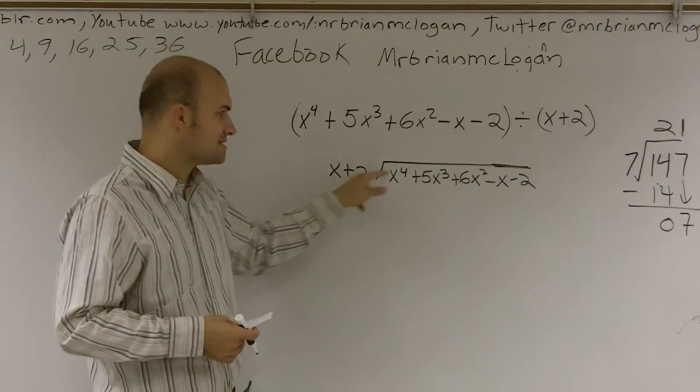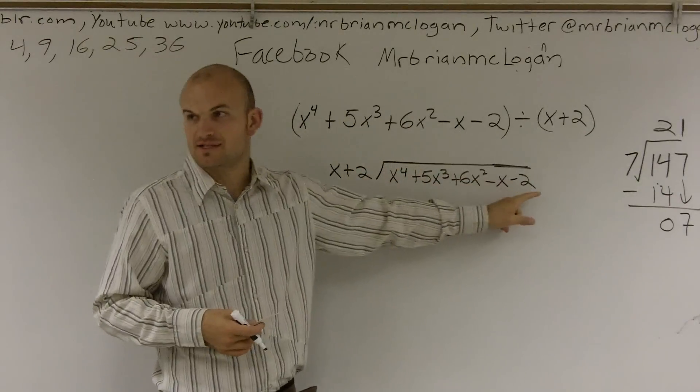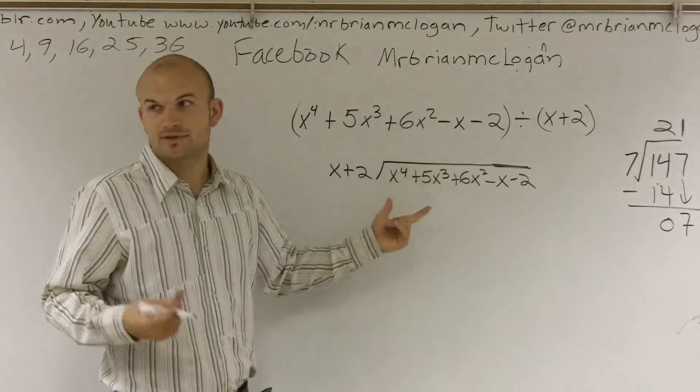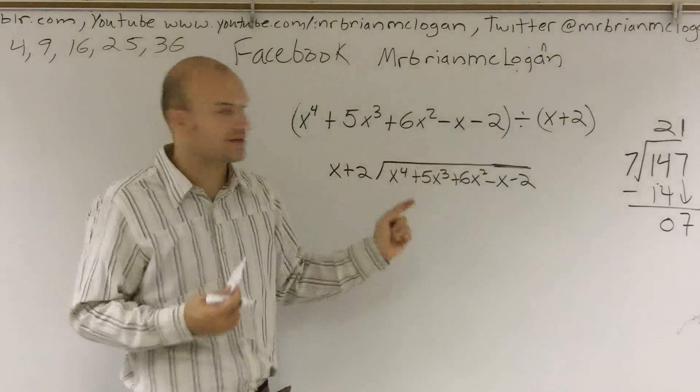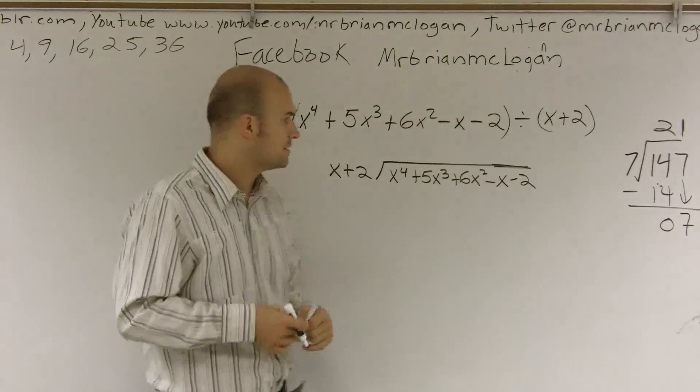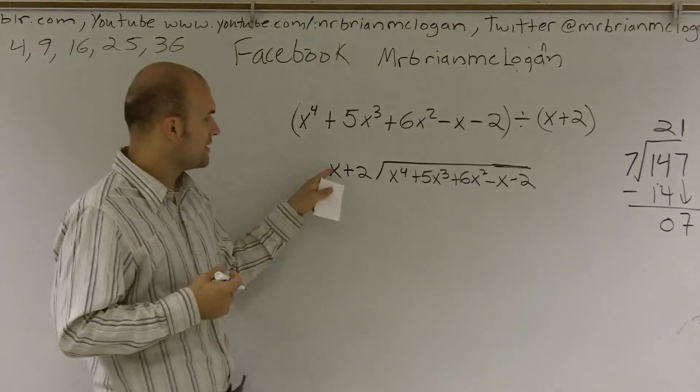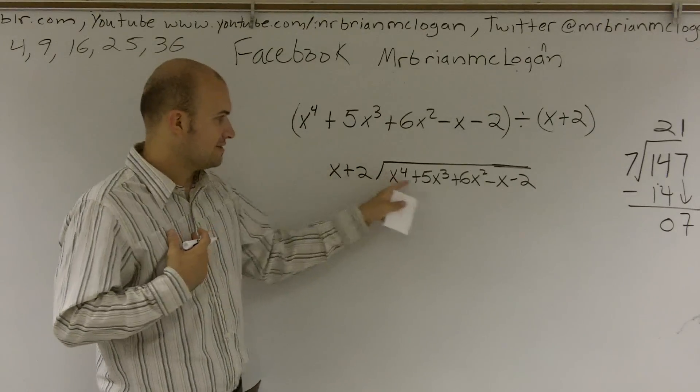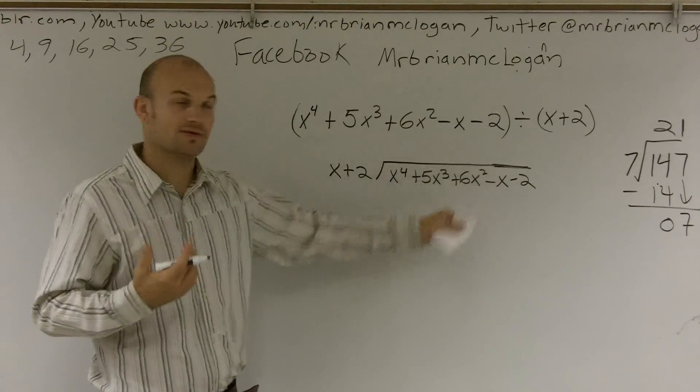Well, this number 2, this doesn't divide into any of these x values, does it? 2 can't go into x to the 4th, right? You can't divide out an x to the 4th. It doesn't go into it. It really only goes into the constant. So what we're going to work on is we're going to see what we can divide our x value into each one of these terms and then see what we're going to get.